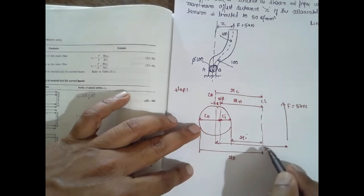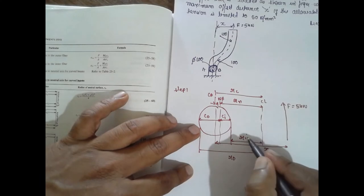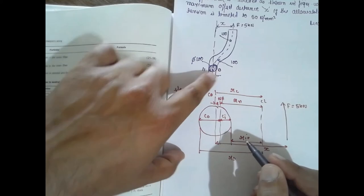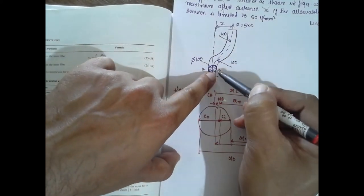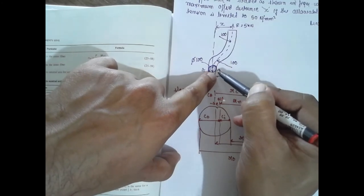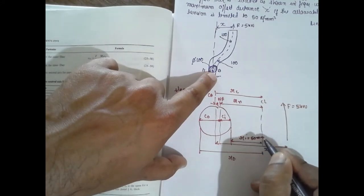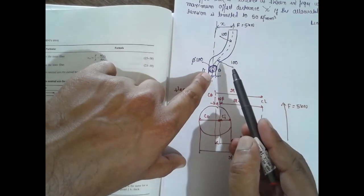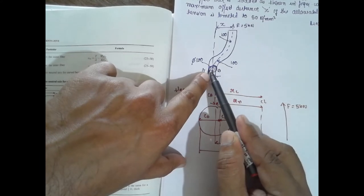Now, as per this data, from the force to the central axis is nothing but x. Comparing with the text, what is ri? This is the fiber section. ri is nothing but the inner fiber.